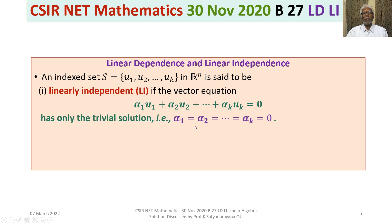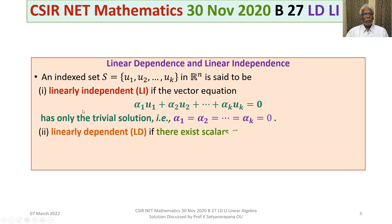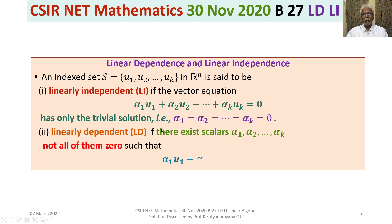That is, alpha1 equals alpha2 equals ... equals alphaK equals zero. S is linearly dependent if there exist scalars alpha1, alpha2, ..., alphaK, not all of them zero, such that their linear combination is the zero vector — that is, alpha1*U1 plus alpha2*U2 plus ... plus alphaK*Uk equals the zero vector.